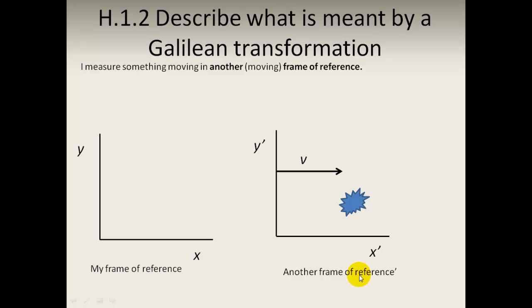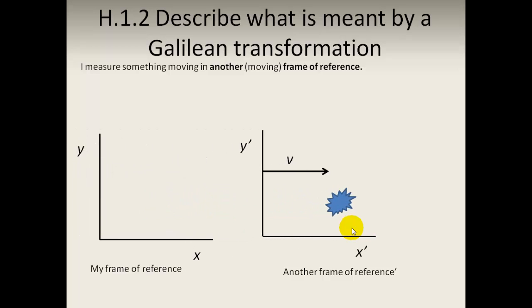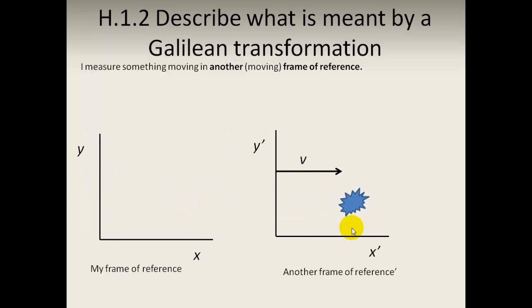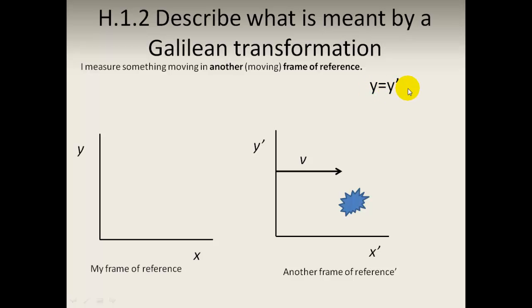I need to measure what is going on in his frame of reference. How can I measure what's going on in that reference? Well, first of all, if it's at a certain height, we're both going to agree on that. The height in my frame and the height in his frame is the same, so my value for Y is going to be equal to his value for Y prime. The same applies for Z.